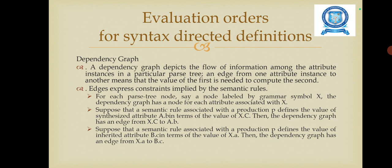A dependency graph depicts the flow of information among the attribute instances in a particular parse tree. An edge from one attribute instance to another means that the value of the first is needed to compute the second. For each parse tree node, say a node labeled by grammar symbol X, the dependency graph has a node for each attribute associated with X. A semantic rule associated with production P defines the value of synthesized attribute A.P in terms of X.C, then the dependency graph has an edge from X.C to A.P. If the semantic rule defines the value of inherited attributes, the dependency graph has an edge from X to B.